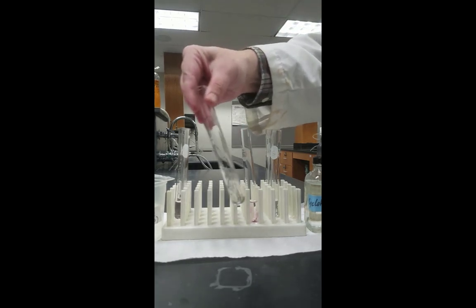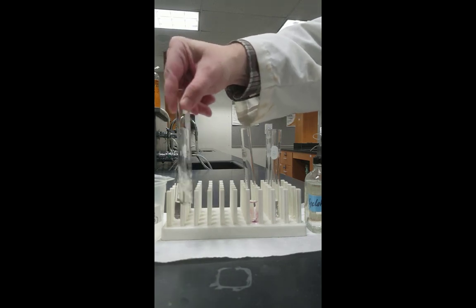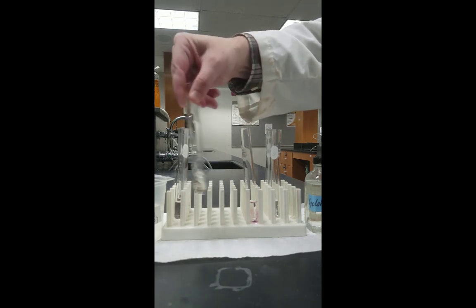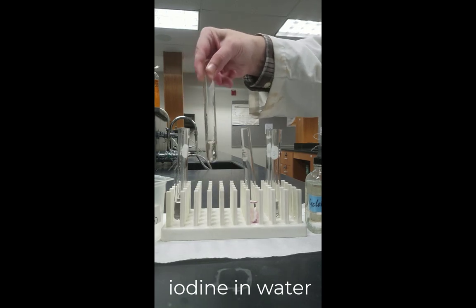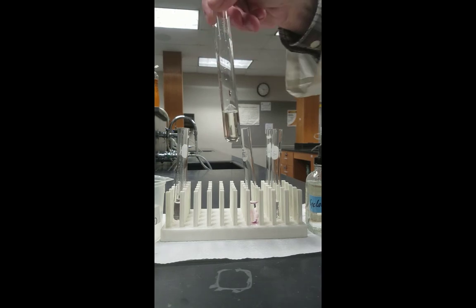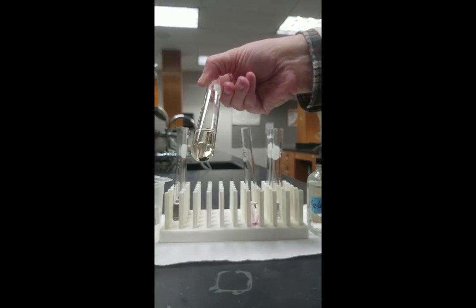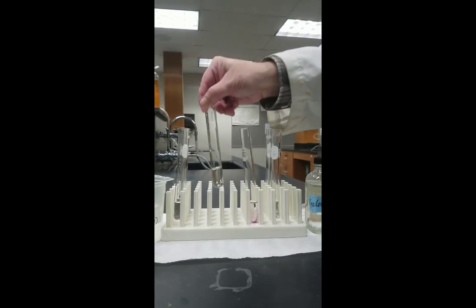Shaking the test tube on the left with iodine and water does produce a slight change. You'll notice if you look very, very carefully that the water is just slightly discolored, a little yellowish or brownish. But most of the solid remains at the bottom of the test tube.